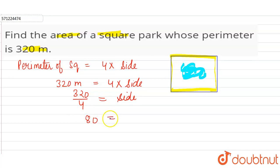The side of the square is 80 meters. Now we have to find the area of the square park, so area of a square is side times side.